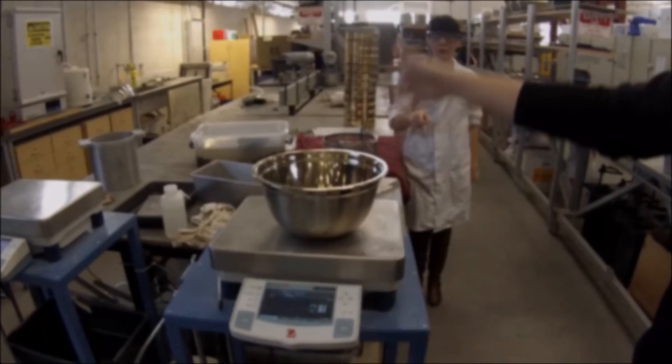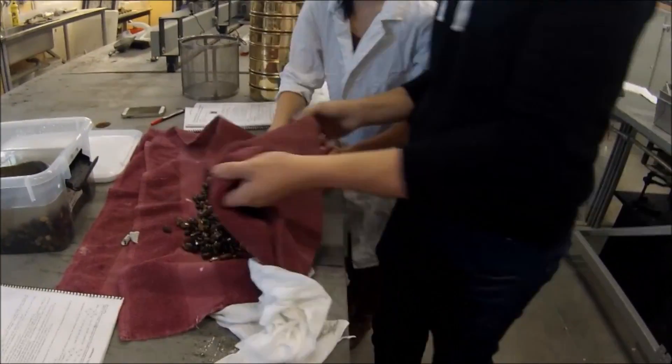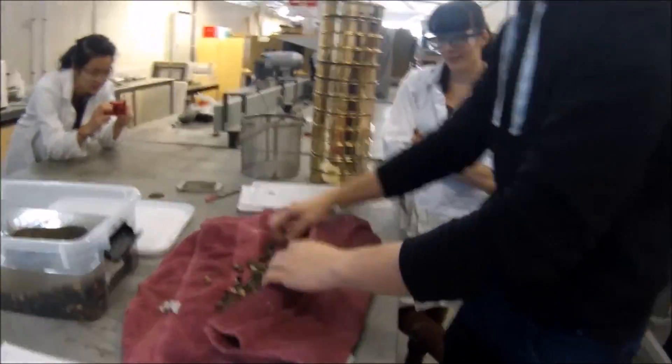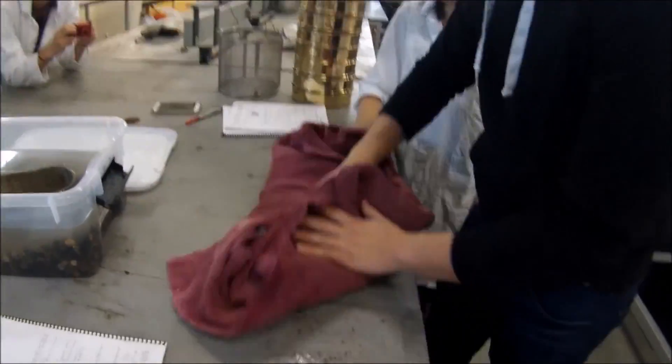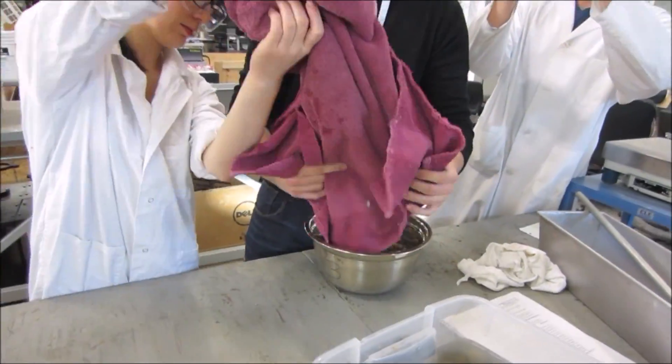Determine the mass of the measure to be used to weigh the saturated surface dry sample. Use a cloth to dry the sample to a saturated surface dry state, until the sample does not appear visibly wet. Next, find the mass of the saturated surface dry sample.